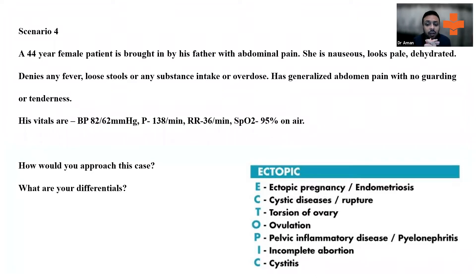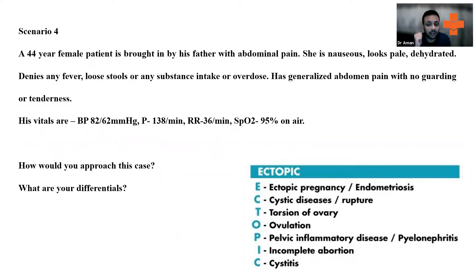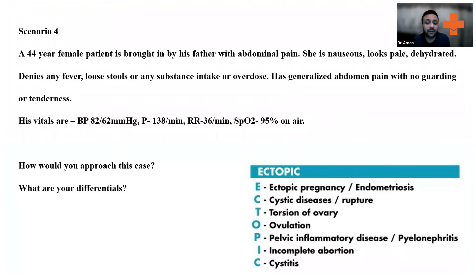So whenever you think about a female patient, think about ectopic — ectopic is very important. Always ask about the last menstrual period. Think about ovarian rupture, ovarian torsion, it could be a simple ovulation issue, or pelvic inflammatory disease. Also think about pyelonephritis, kidney stones, incomplete abortion, or cystitis.